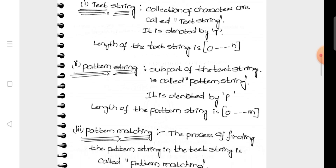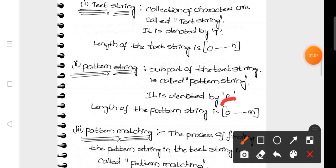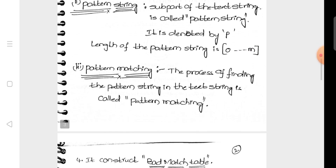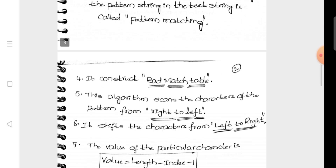The next one is Pattern String. Pattern String is a text string — it contains all the patterns that you have in the text string. Pattern Matching is a procedure in which a pattern string is searched within a text string.